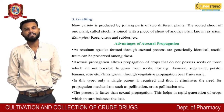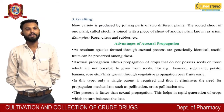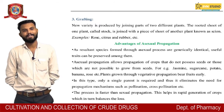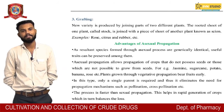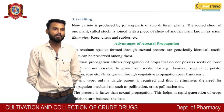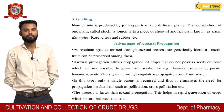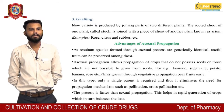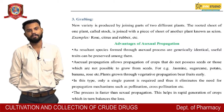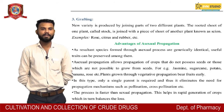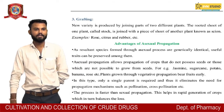Plants grown through vegetative propagation bear fruits early. In this type, only a single parent is required, which eliminates the need for a partner for propagation. The process is faster than sexual propagation, helping in rapid generation of crops which in turn balances the loss.